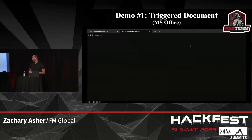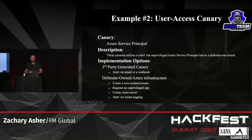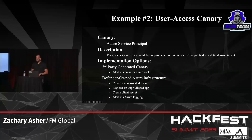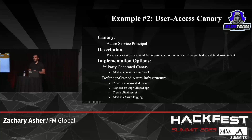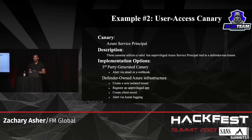For example two, we'll look at a user access canary: a canary Azure service principal. These are valid but unprivileged service principals tied to an unprivileged application hosted in a defender-owned tenant. When a red teamer attempts to authenticate using the service principal, an alert is fired. From the blue teamer's perspective, you have two options: use a third-party generated service principal canary, or utilize Azure infrastructure you or your company owns — optionally creating a new isolated tenant, registering an unprivileged application, creating a client secret, and setting up alerting for any authenticated requests.